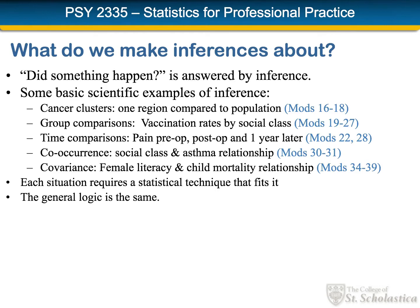The rest of our course after this week will look at different kinds of inferential statistics. At a very general level, the question 'did something happen?' is answered by making inferences. We're trying to use a sample to decide if a treatment had an effect or if a situation in the real world is having an impact. These are some basic examples of scientific inference, and on screen you can see the modules where we will take up those topics.